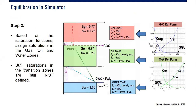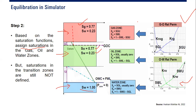Step 2: based on the saturation function, assign saturation in the gas, oil, and water zones. For example, we assign gas saturation and water saturation in the gas cap, oil saturation and water saturation in the oil zone, and 100% water saturation in the water zone. Starting from relative permeability and capillary pressure curves, we get the saturation values — but saturation in the transition zone is still not defined at this stage.